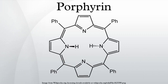Porphyrins are a group of heterocyclic macrocycle organic compounds composed of four modified pyrrole subunits interconnected at their alpha-carbon atoms via methane bridges. The parent porphyrin is porphine, and substituted porphines are called porphyrins.